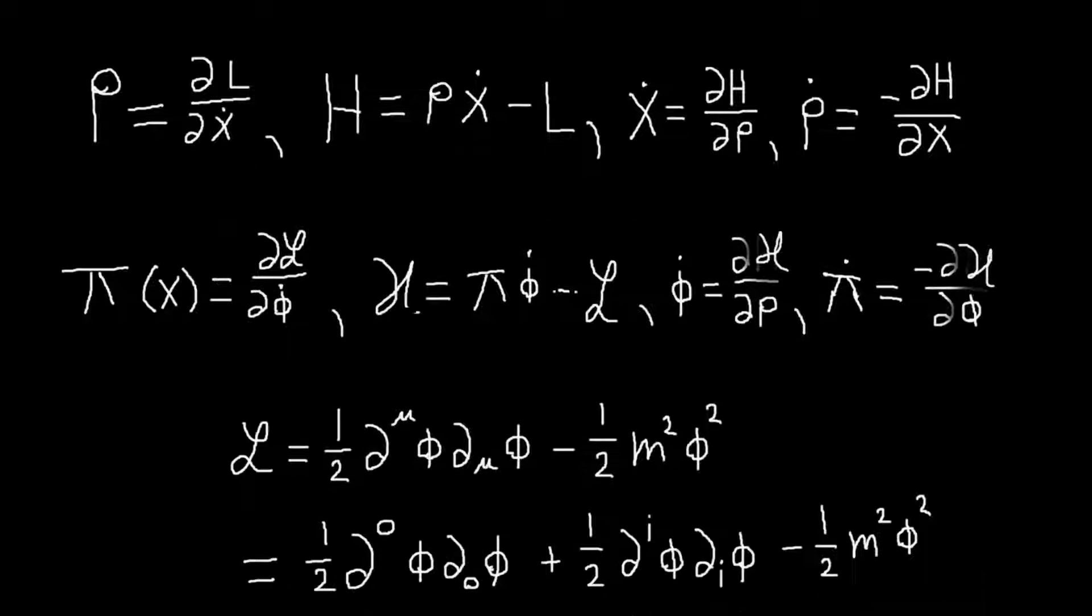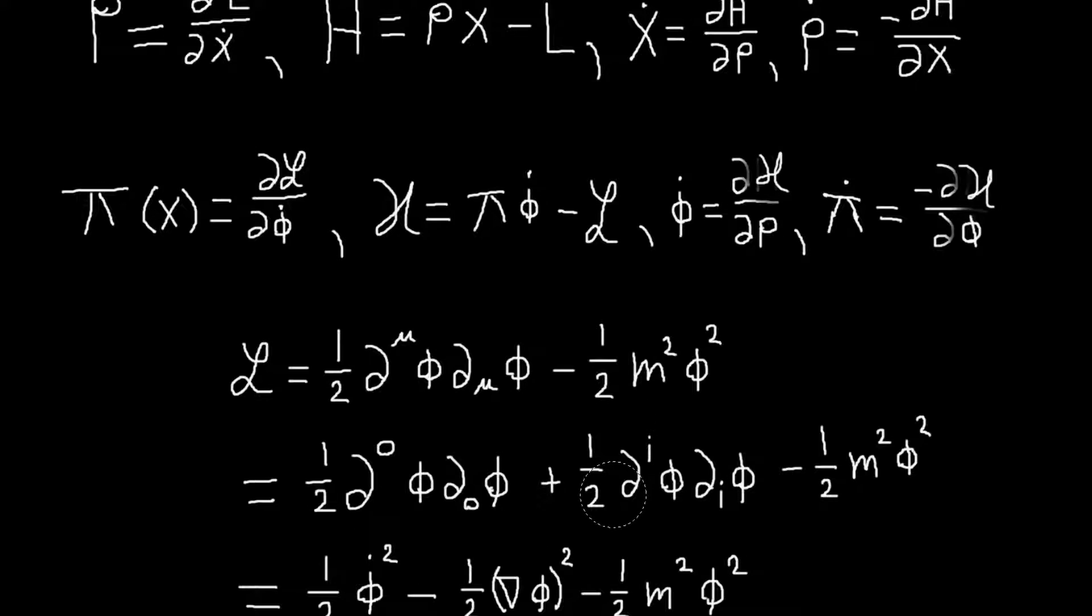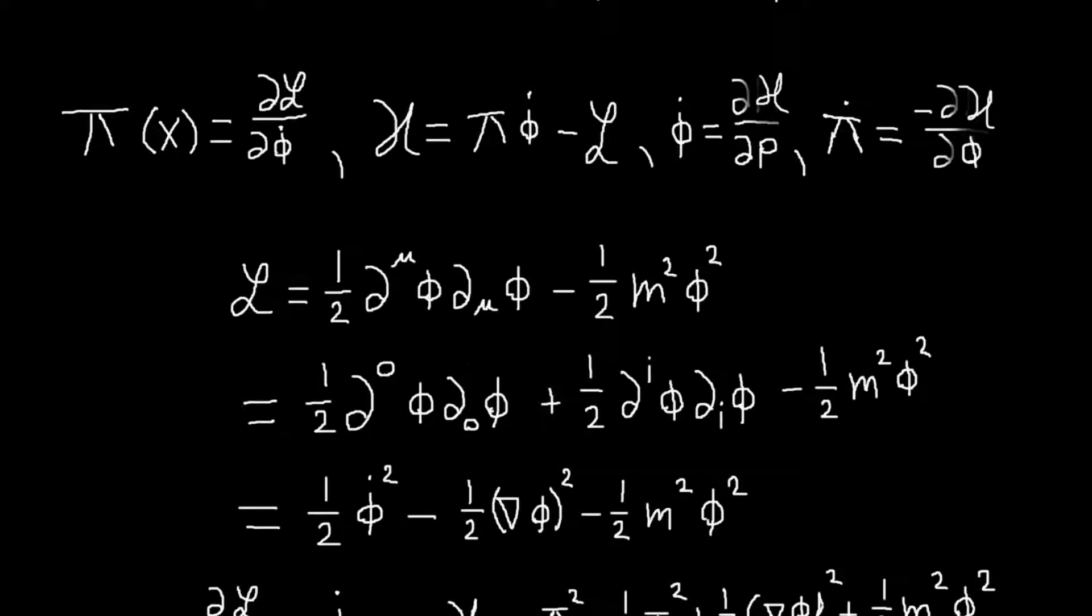So if we notice here, now because we have our conjugate momenta that we defined as the derivative with respect to the time derivative of the field, time is kind of a special coordinate. So we're going to split this derivative term into the time and spatial parts. I've done that a few times before. I just expand the sum. So zero is the time part, and then i is still summed only over the spatial components.